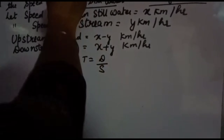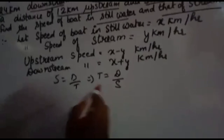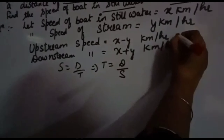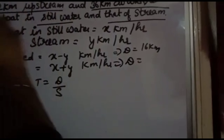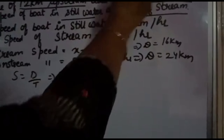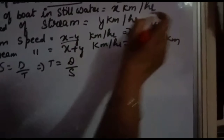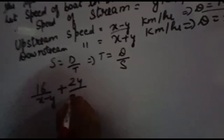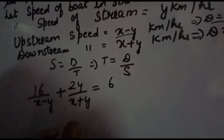Speed equals distance over time, so time equals distance over speed. Total time is 6 hours in both cases. For the first case: upstream distance is 16 km and downstream distance is 24 km. So the time equation is: 16 over (x minus y) plus 24 over (x plus y) equals 6 hours.